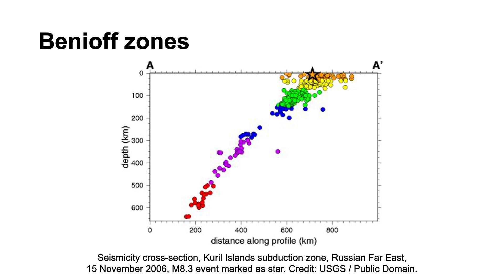Where two continental plates collide, we typically see shallow to medium-depth earthquakes, occurring along deep-rooted faults where crustal compression is taking place.